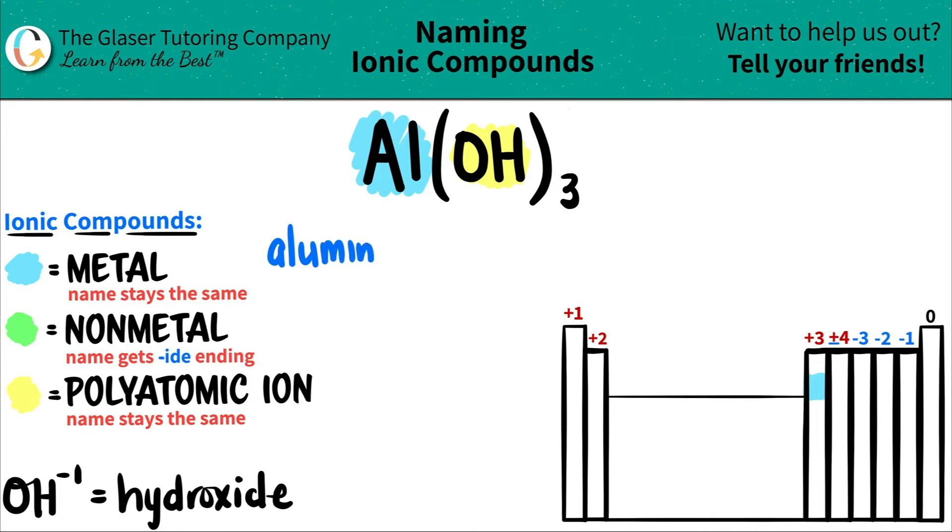Aluminum. I believe it's even spelled differently, but on my periodic table, it's spelled like this. Aluminum. Okay, cool. Then the next thing is polyatomic ion.